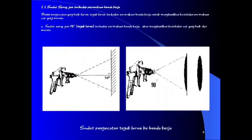Selanjutnya sudut spray gun terhadap permukaan benda kerja. Posisi pengecatan yang baik harus tegak lurus terhadap permukaan benda kerja untuk menghasilkan ketebalan permukaan cat yang merata. Sudut spray gun 90 derajat tegak lurus terhadap permukaan benda kerja akan menghasilkan ketebalan cat yang baik dan merata, seperti terlihat pada gambar.